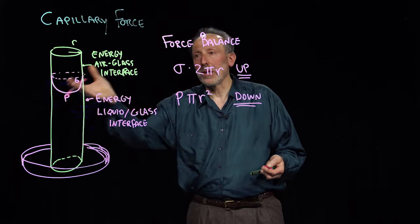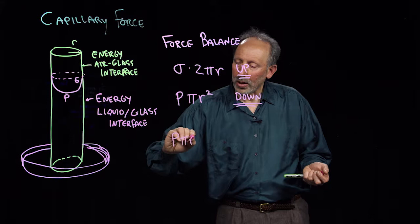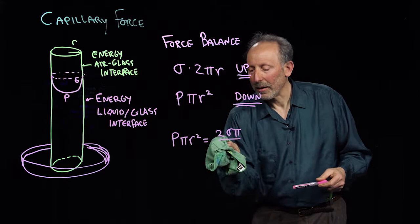And how are we going to solve for this pressure? We're going to say that we let this thing come to equilibrium. Now the upward and downward forces are identical. And so we set those equal to each other. And what do we get? We get P times πr² is equal to 2σπr.